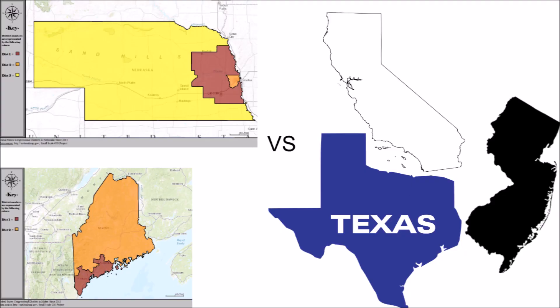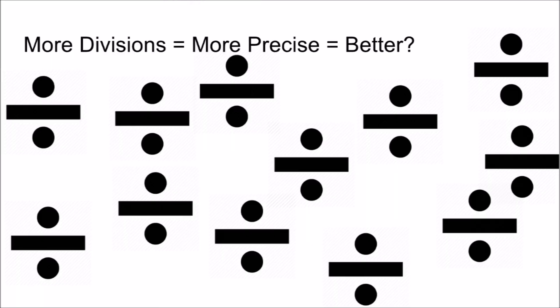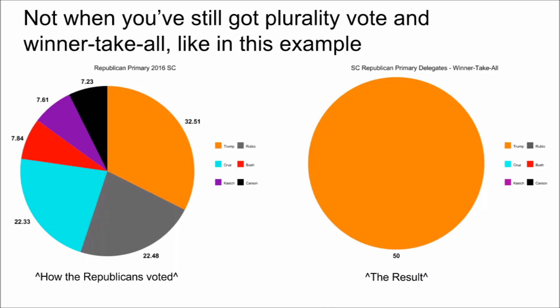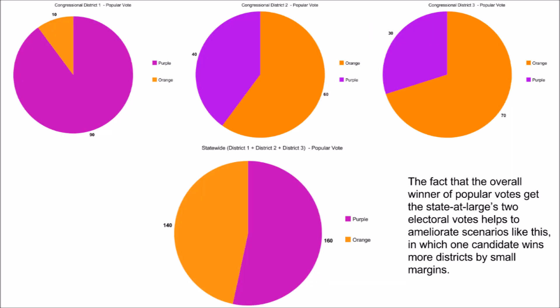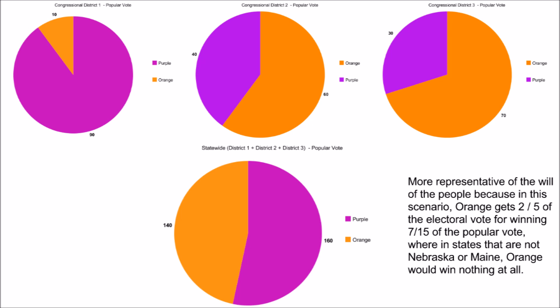The real question is whether or not the Nebraska-Maine system is more or less representative than the system used by the other states and DC. The main difference is that the Nebraska-Maine system is divided by congressional districts while everyone else divides by state. This may seem better because it has smaller divisions, but it is still plagued by the same issues: plurality vote and winner-take-all, meaning that winning by a small margin yields the same result as winning by a huge margin. However, the two electoral votes from winning the state's overall vote helps to counteract this and does make the electoral votes more democratic and more representative of the will of the people.